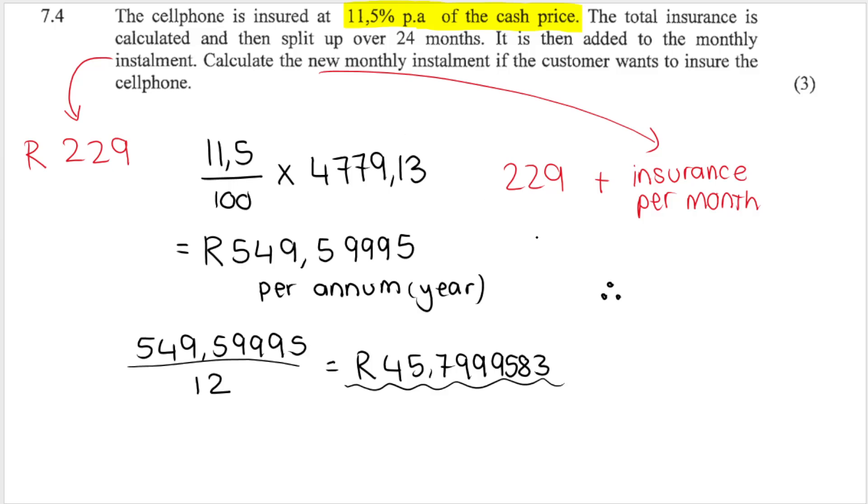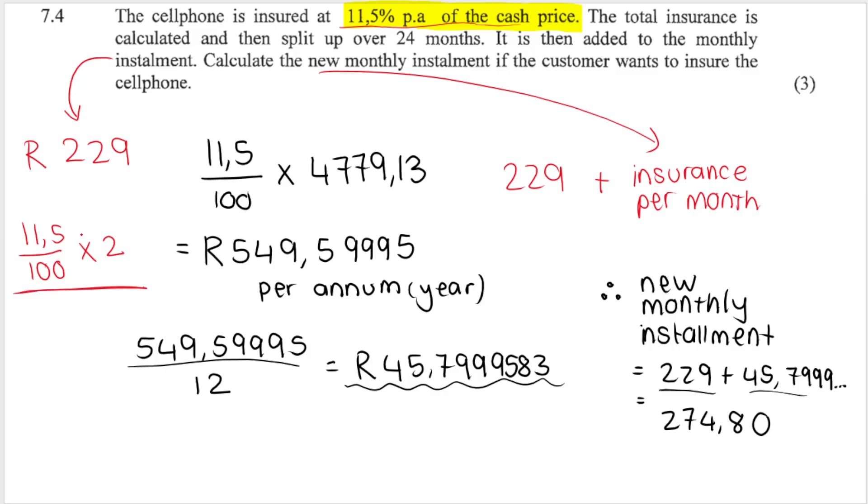Therefore, to get the new monthly installments, we add the original monthly installment, plus the insurance amounts. And we get R274, now my calculator says 7999. We round off to two decimal places. So, it'll be 80. Now, a lot of students may have misinterpreted the question because they say the total insurance is calculated, then split up over 24 months. But remember that this over here, the insurance price is quoted per annum. So, for one year. So, what you could have also done is you could have said, okay, cool. If it's 11% per annum, I have two years. So, you times it by two. And then the total amount of months over the two years is 24 months. But doing this will end up giving you the exact same amount of monthly insurance as what I got originally over here.